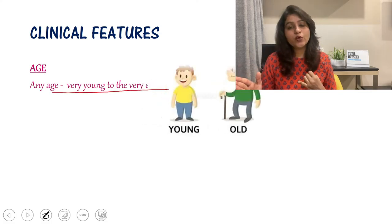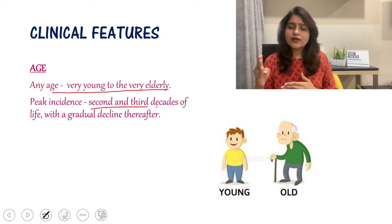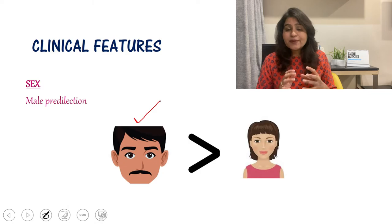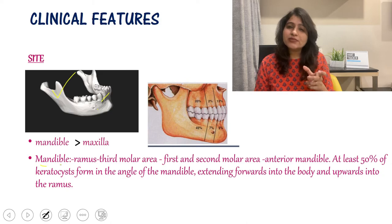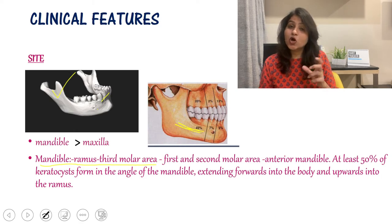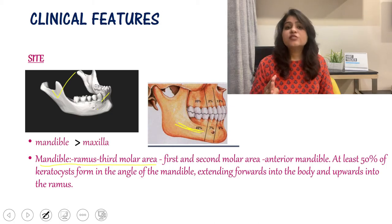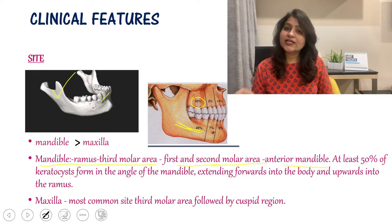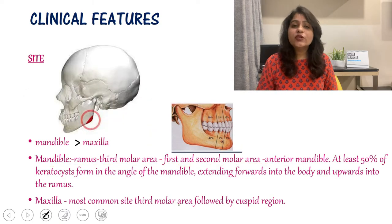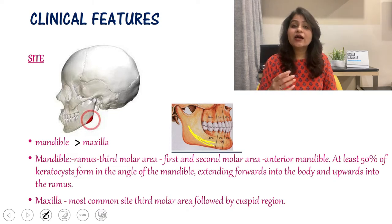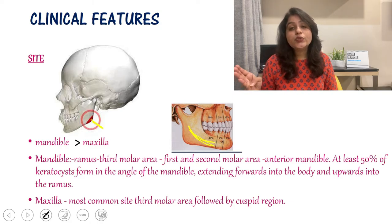Regarding clinical features of OKC: it can occur at any age but most commonly in the second and third decade of life. It shows male sex predilection. The mandible is more commonly affected, particularly the ramus and third molar area — similar to ameloblastoma. This is followed by the first and second molar area and then the anterior mandible. In the maxilla, the common site is the third molar followed by the maxillary cuspid area. OKCs tend to grow anteroposteriorly, with at least 50% occurring at the angle and growing into the body anteriorly and the ramus posteriorly.